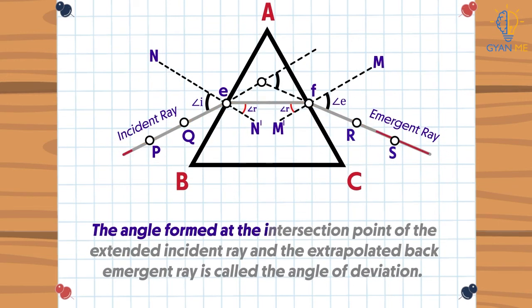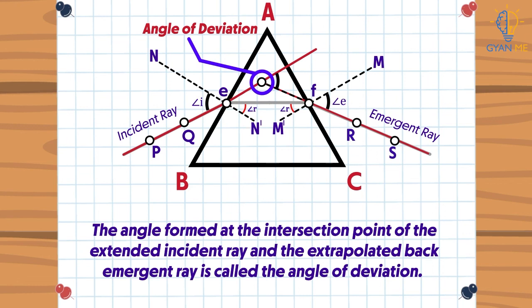Yes. Thus the angle formed at the intersection point of the extended incident ray and the extended back emergent ray is called the angle of deviation. It is represented by the Greek alphabet delta or D.